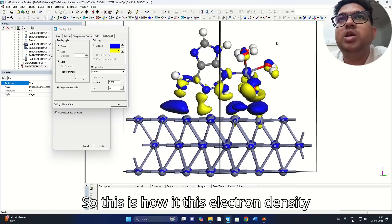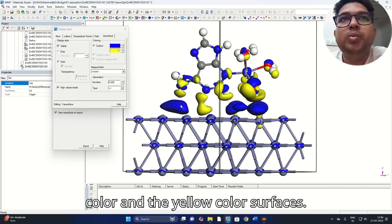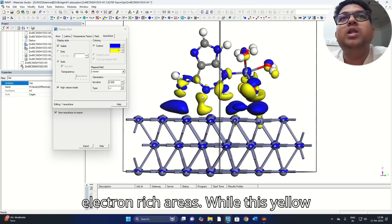So this is how the electron density difference file looks like. And I already told you what is the meaning of this blue color and the yellow color surfaces. This blue color represents the electron rich areas while this yellow color represents the electron deficit areas.